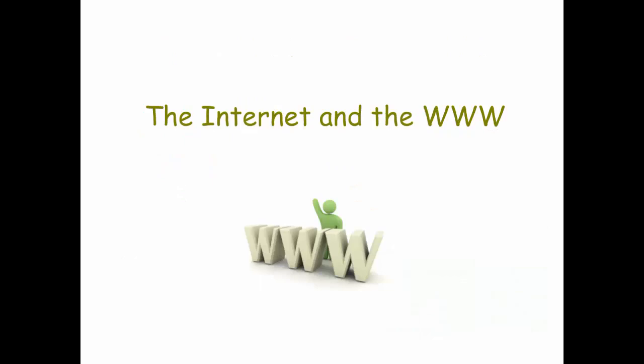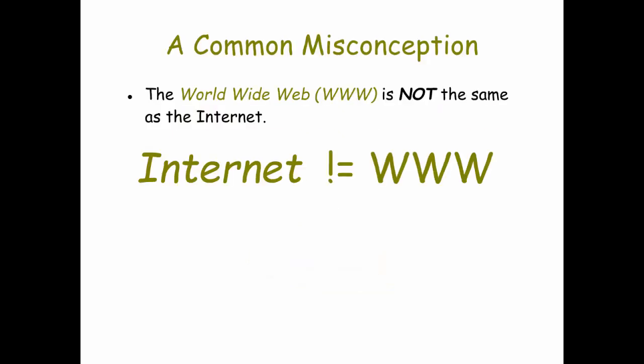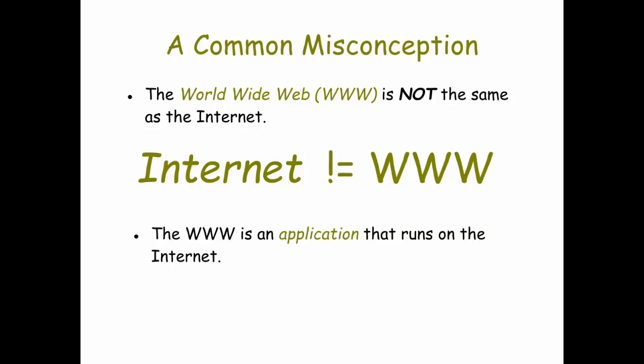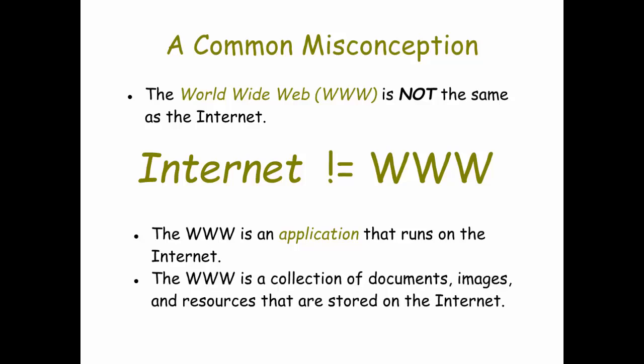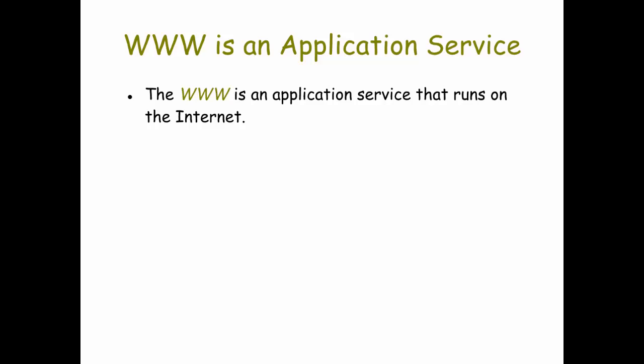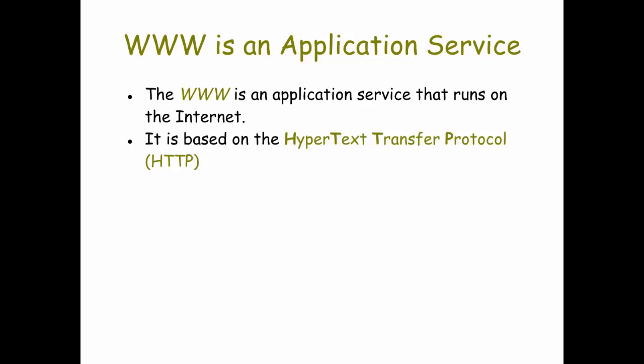Let's look at the differences between the Internet and the World Wide Web in more detail. We've already said that the Internet is a network of networks that uses the Internet Protocol Suite to communicate. A common misconception is that the World Wide Web is the Internet, but in reality they are not the same thing. The World Wide Web is an application that runs on top of the Internet. The Web is a collection of documents, web pages, images, and other kinds of resources — script files and that kind of thing — stored on the Internet. The Internet is the network or hardware underneath that the World Wide Web uses to communicate and send information to various computers. So the World Wide Web itself is not a network; it uses the Internet as its network. The Web is what we call an application service that runs on top of the Internet.